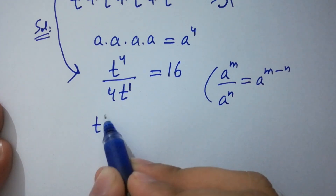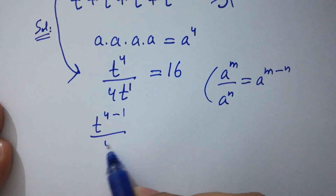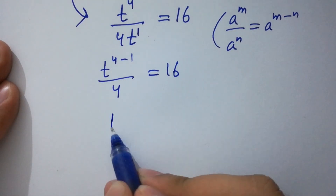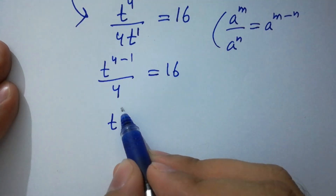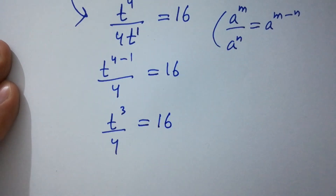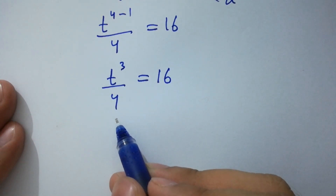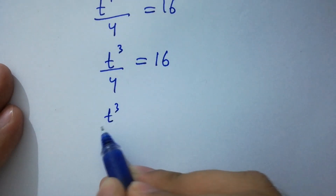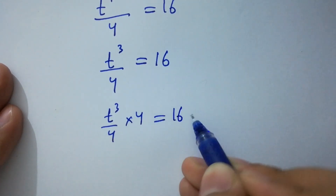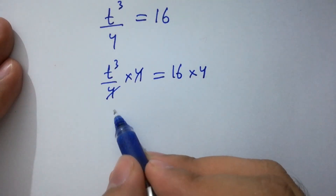Applying that rule, it will be t to the power 4 minus 1 over 4 equals 16. t to the power 4 minus 1 is 3, so t to the power 3 over 4 equals 16. To cancel the 4, we multiply by 4 on both sides: t cubed over 4 times 4 equals 16 times 4, and the 4s cancel.